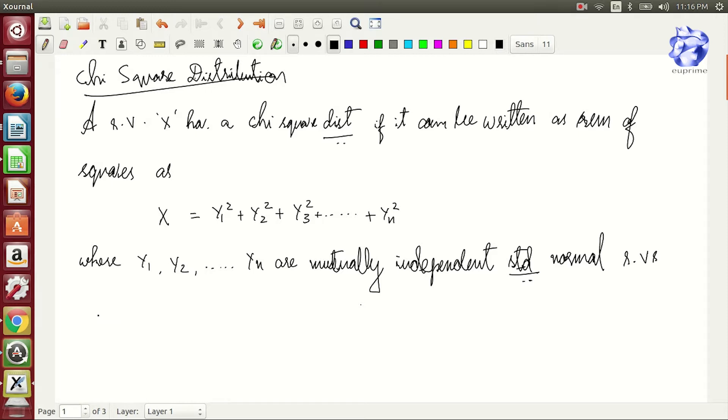y1, y2 to yn are mutually independent standard normal random variables.